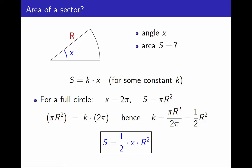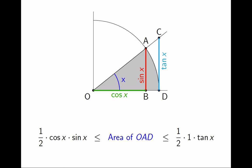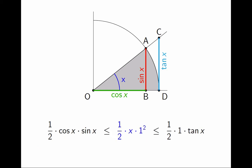Okay, back to the previous problem. I was trying to calculate the area of this circle sector OAD. I now know that it must be 1/2 of the angle, which is x, times the radius squared, in this case 1. Good!